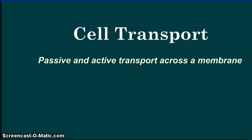Welcome back. Today's topic is cellular transport. We'll be specifically talking about the two kinds of cell transport and comparing them, as well as introducing you to how they work. Passive and active transport are the two ways that a cell moves things across a membrane. This is important for the cell because this is the way that the cell maintains balance, otherwise known as homeostasis.